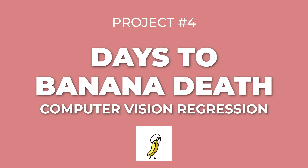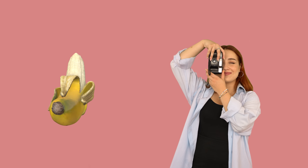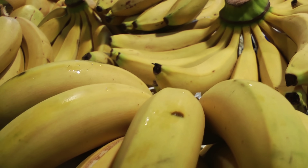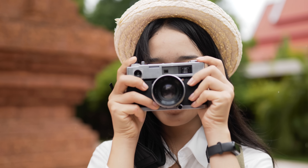Project number four: Days to Banana Death — a computer vision regression project. This idea came from one of my mentees at UC Berkeley. The problem is simple: you buy bananas, forget about them, and suddenly they're brown and mushy. What if you could take a picture of the bananas and know exactly how many days you have left before banana death? For data collection, you'd need to create your own dataset — buy bananas at different ripeness levels, photograph them daily until they're gross or ready for banana bread, and label each image with days remaining. You could probably collect a solid dataset with just a few dozen bananas over a couple of weeks.